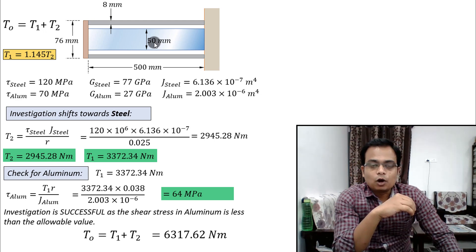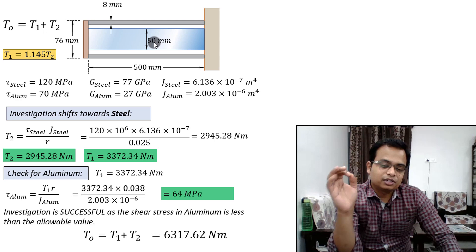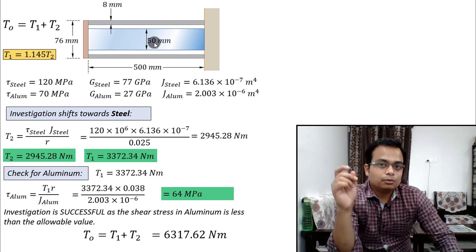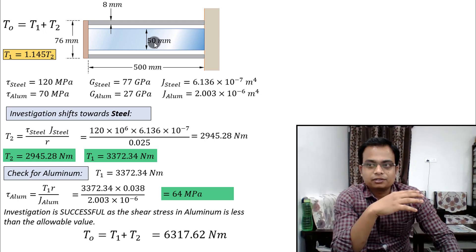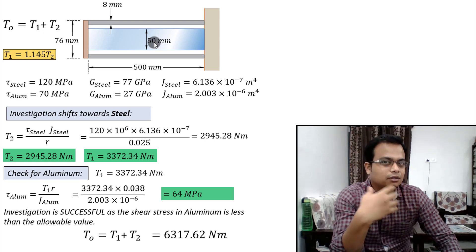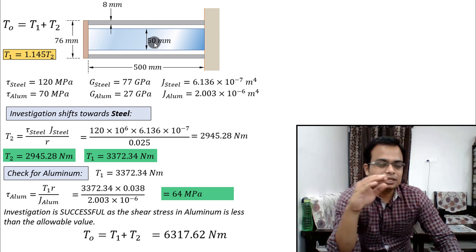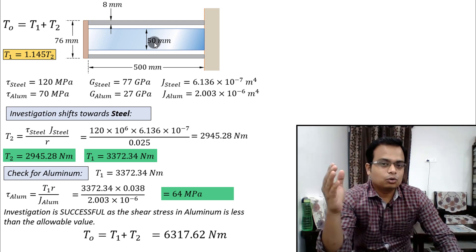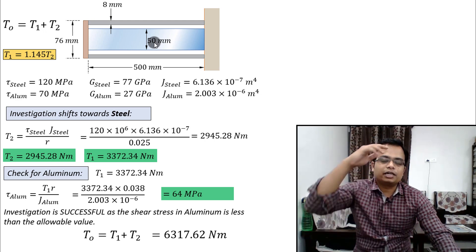This brings us to the end of all the videos on torsion in circular shafts. Next, we will be making videos on pressure vessels, covering different kinds of stresses — normal and tangential — including circumferential hoop stresses. That's all for today; take care, keep learning, and thank you.